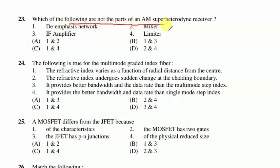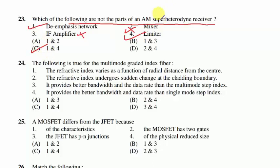Question 23: which are not parts of an AM superheterodyne receiver? A superheterodyne receiver consists of a mixer, IF amplifier, loudspeaker, and demodulator, but it does NOT include a de-emphasis network or a limiter circuit. Suitable option C. You should be familiar with the block diagram and SNR of a superheterodyne receiver.